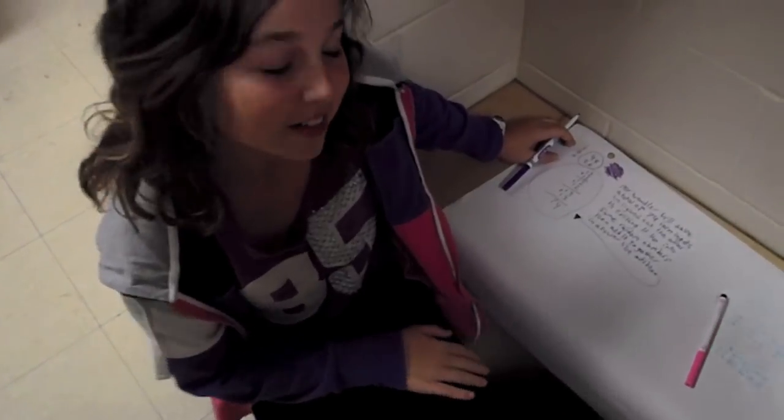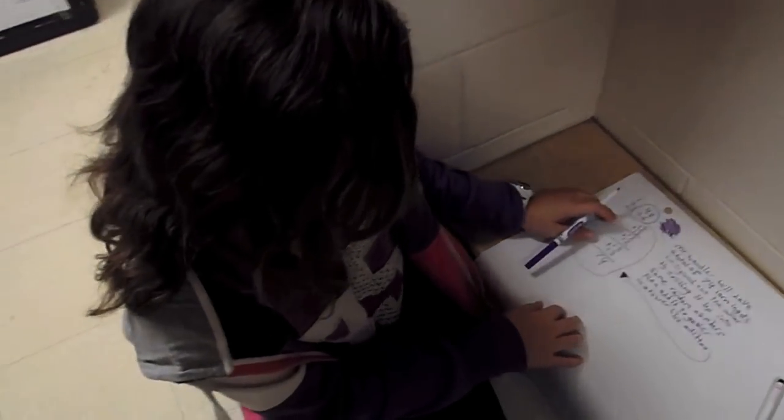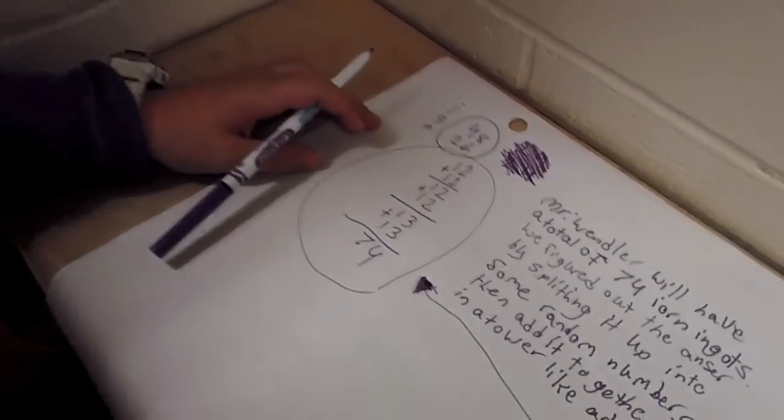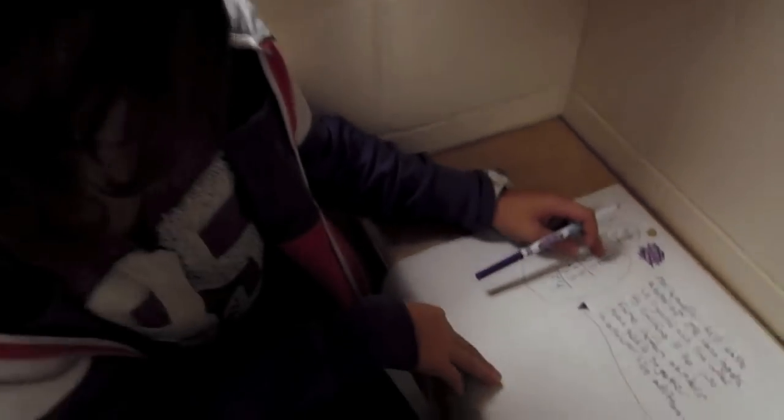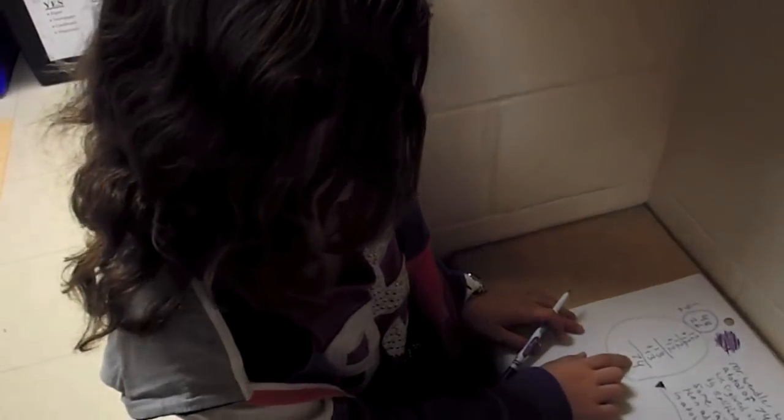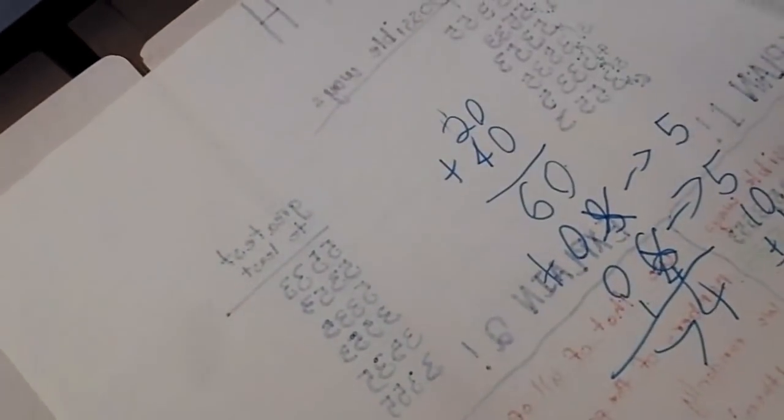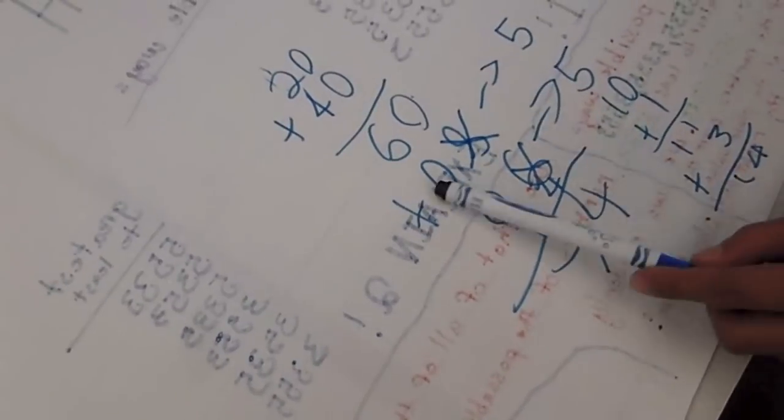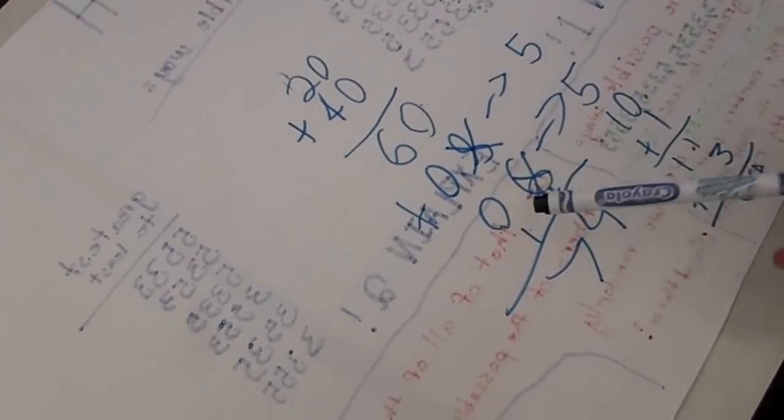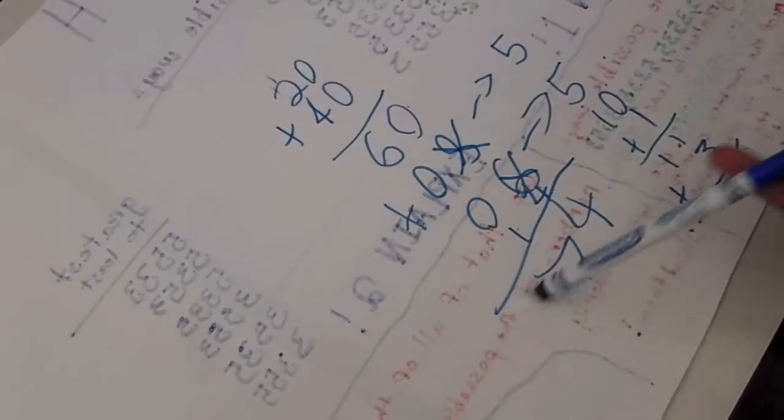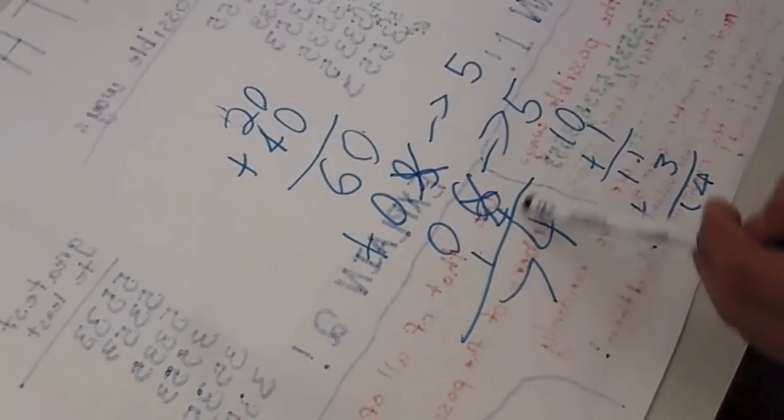First, I took the 48 and split it up into friendly numbers. Then I went over to the 26 and split it up. Although they were not friendly numbers, they were still easy to add. I broke 26 and 48 to 20 and 40, then added them to 60. Then I went to 8 and 6, broke them into 5 and 5 to make 10, then added 1 to get 11 and 3 to get 14. Then I added 14 to get 74.